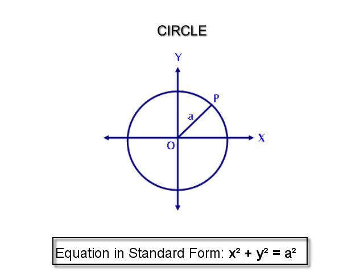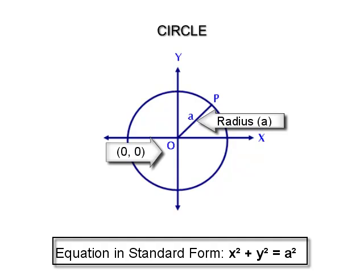Different forms of an equation of a circle are: standard equation. The equation of a circle in standard form is x² + y² = a². The center of this circle is at the origin and the radius is a. An equation is said to be in standard form if the least number of arbitrary constants is involved.